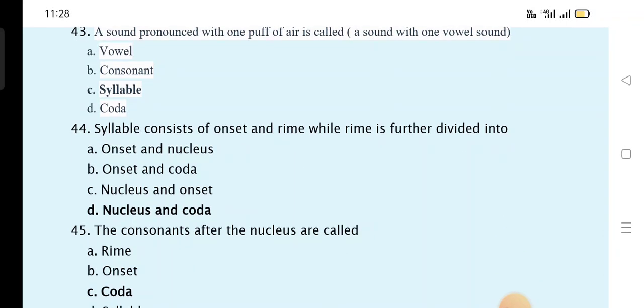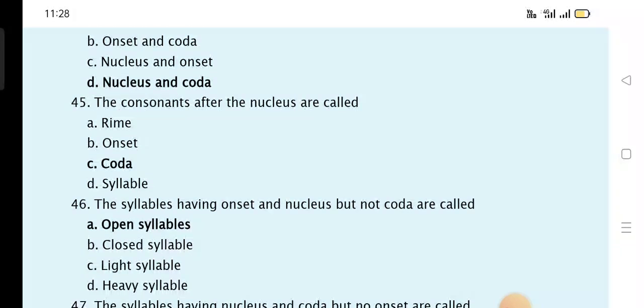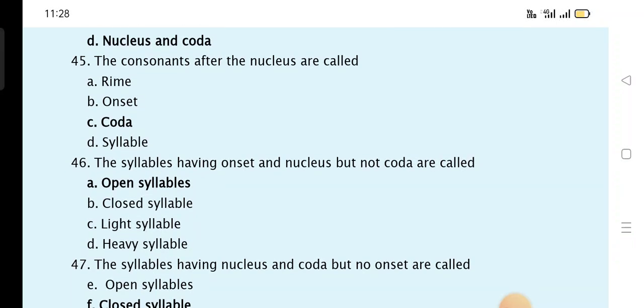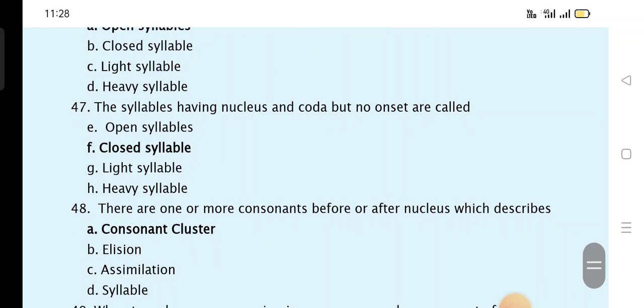The syllable consists of onset and rhyme while the rhyme is further divided into nucleus and coda. The consonants after the nucleus are called coda. The syllables having onset and nucleus but not coda are called open syllables. The syllables having nucleus and coda but no onset are called closed syllables.